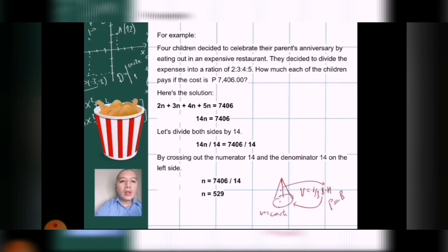So, for our example, let's say there are 4 children who decided to celebrate their parents' anniversary by eating out in an expensive restaurant. They decided to divide the expenses into a ratio of 2 is to 3, 3 is to 4, and 4 is to 5. How much each of the children pays if the entire cost is 7,406 pesos? So, just to further elaborate the problem, try to imagine that there's a certain family with 4 siblings, and then these 4 siblings have different capabilities or different salaries. One can only afford 2 parts, one can only afford 3 parts, the other can only afford 4 parts, and then the last one, who earns more salary than the rest of the siblings, can pay for 5 parts, so all we have to do here is just add the parts of the entire whole.